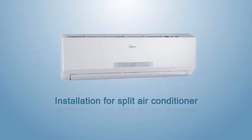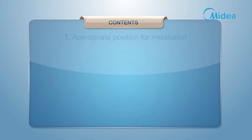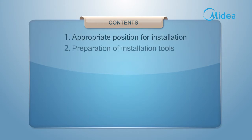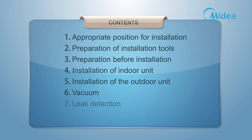Installation for split air conditioner. This installation is mainly divided into the following parts: 1. Appropriate position for installation. 2. Preparation of installation tools. 3. Preparation before installation. 4. Installation of indoor unit. 5. Installation of outdoor unit. 6. Vacuum. 7. Leak detection. 8. Trial operation.